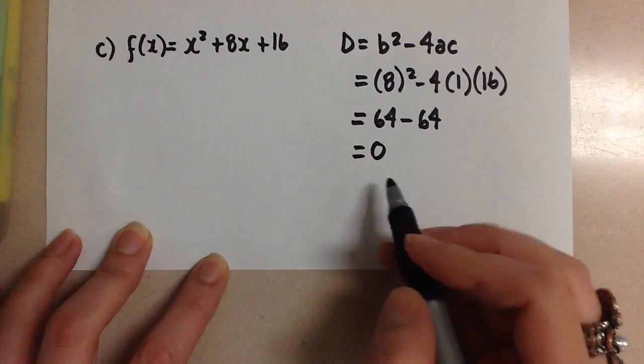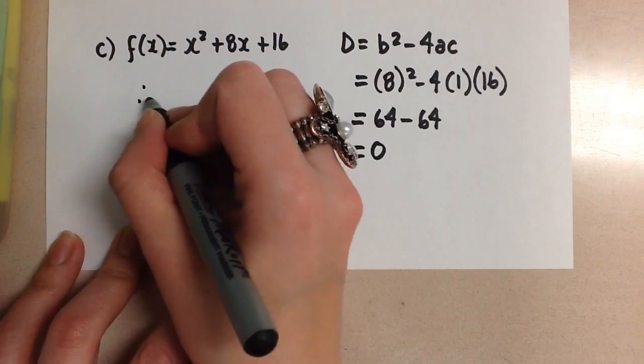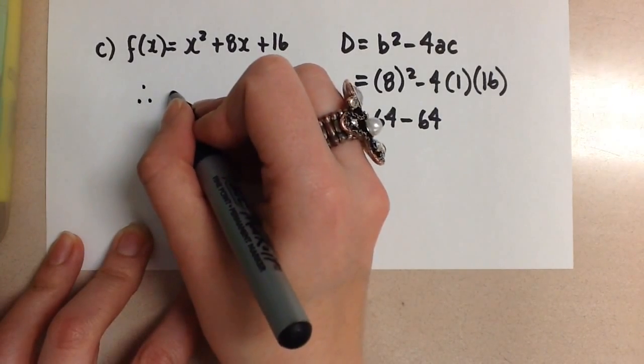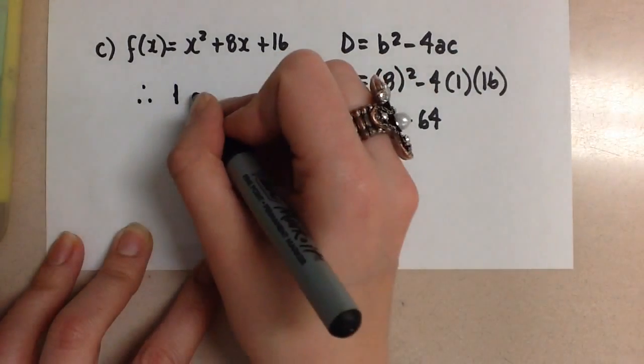When you have a discriminant of 0, this means that we're going to have only one root.